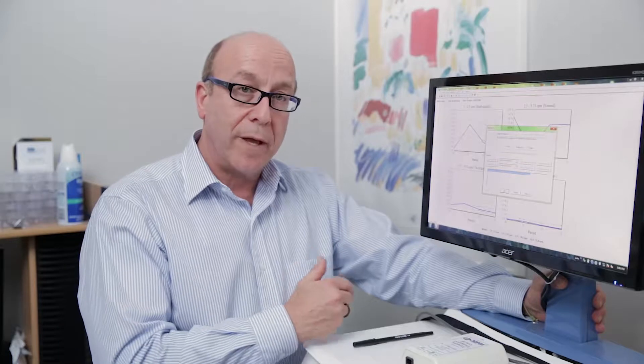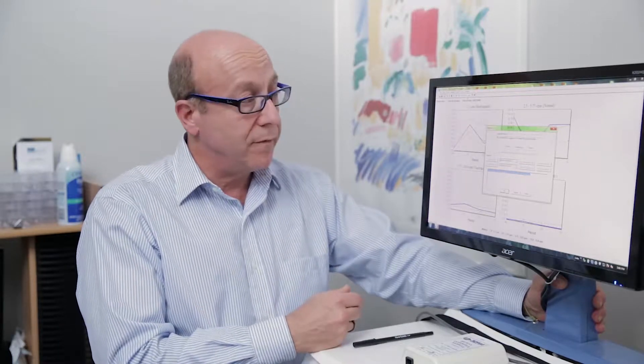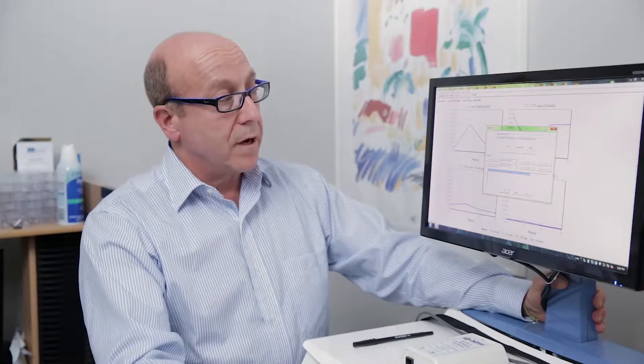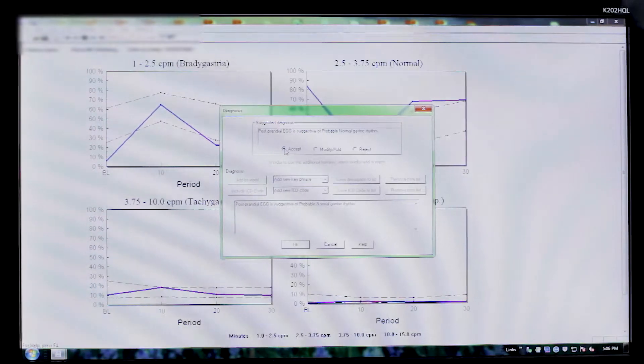However, we know because it's abnormally high, which we would call hypernormal GMA, or gastric myoelectric activity, that this is suggestive of functional outlet obstruction. You can decide to keep this diagnosis by clicking Accept, and then OK.